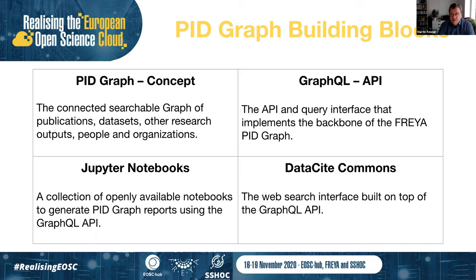We decided, after trying to stretch our existing infrastructure — which is basically relational databases, search indexes, and REST APIs — that it's really hard and we need something else. We decided to use GraphQL as a technology; it's a very flexible query language for querying graphs like a PID graph. That work happened maybe a year into the project, bringing us to the beginning of last year.